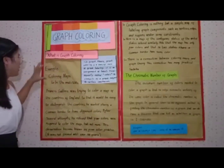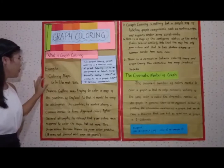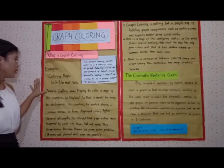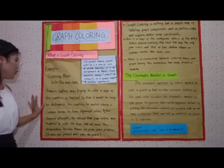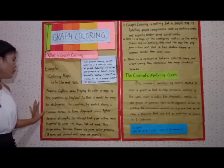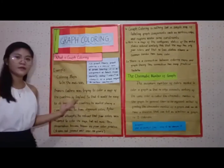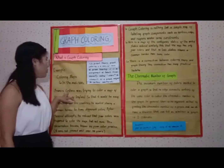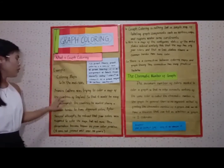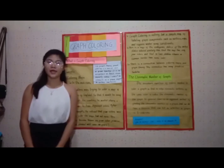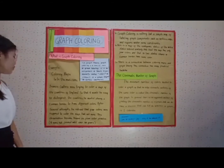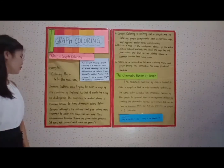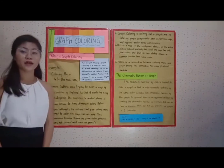An example of graph coloring is coloring maps. In the mid-1800s, Frances Guthrie was trying to color a map of the countries of England so that it would be easy to distinguish the countries — he wanted countries sharing a common border to have different colors. He noticed that four colors were required to color the map. His observation became known as the four-color problem, and it was not proven until over 100 years later.